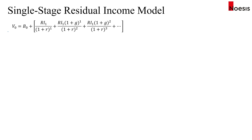In this model, the intrinsic value V0 equals the current book value per share B0, plus the present value of all residual income. In the first year we have residual income in year one, and for year two we take the residual income in year one and apply a growth rate G, repeating that every year.